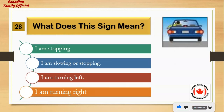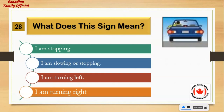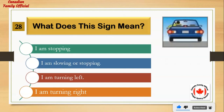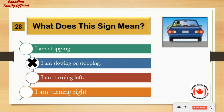What does this sign mean? Number 1: I am stopping. Number 2: I am slowing or stopping. Number 3: I am turning left. Number 4: I am turning right. And the answer is: I am slowing or stopping.